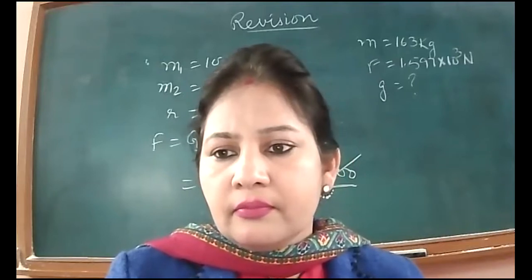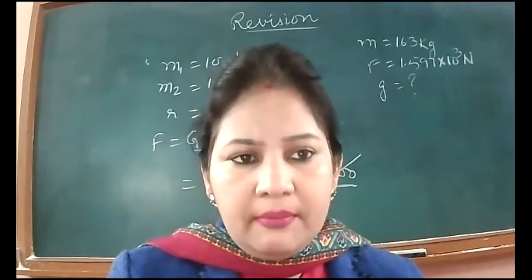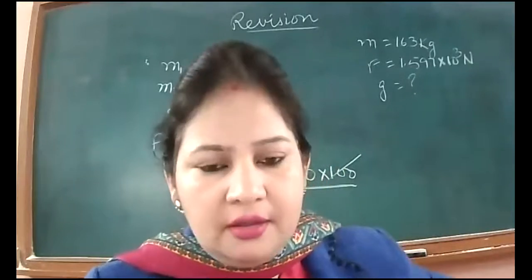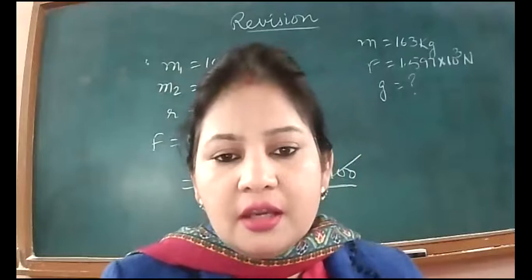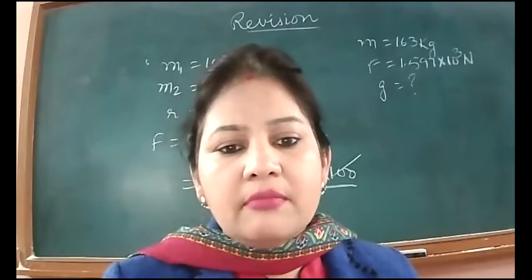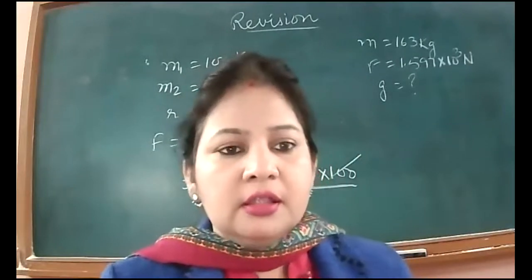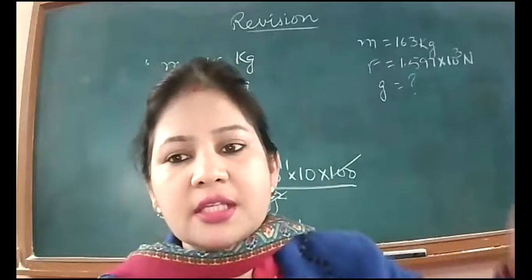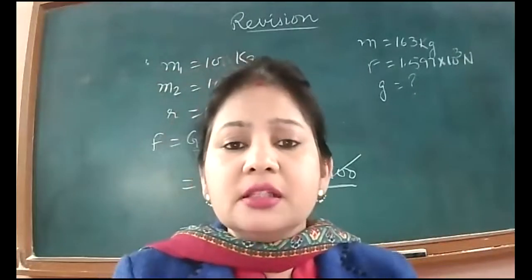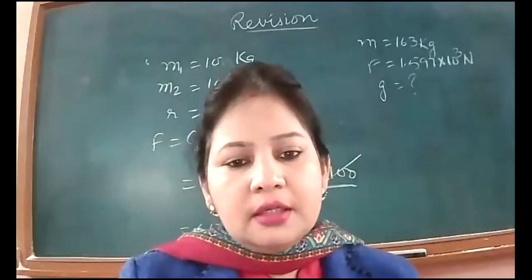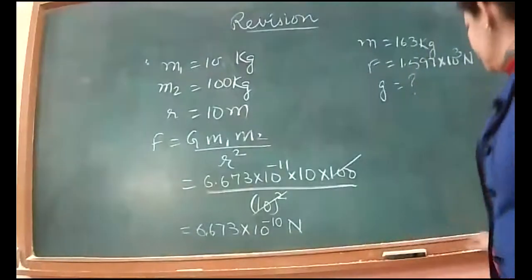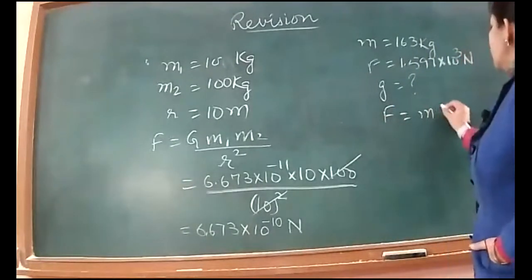F is equal to MA. F is equal to MA and here A is G. In case of vertical motion, acceleration due to gravity is G, so this is F is equal to MG, weight only. So this force that the body is exerting on the earth, that is weight only. So we will equate W is equal to MG or F is equal to MG here.